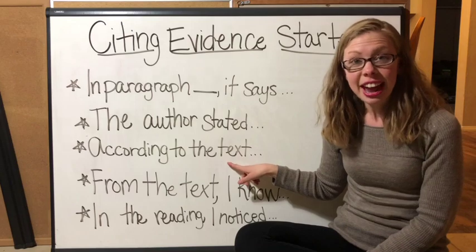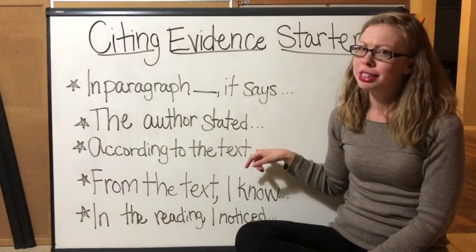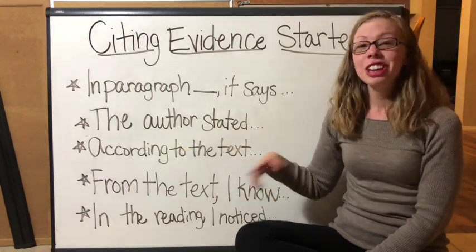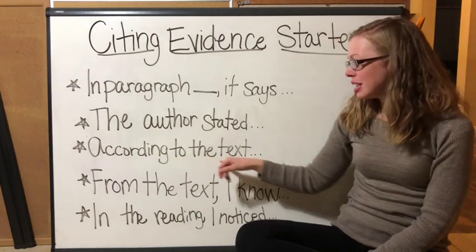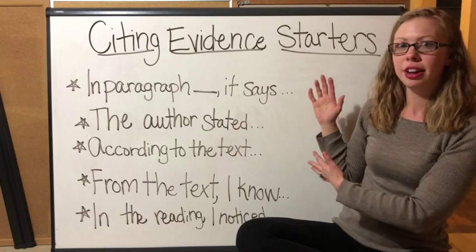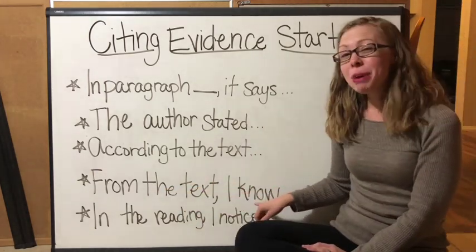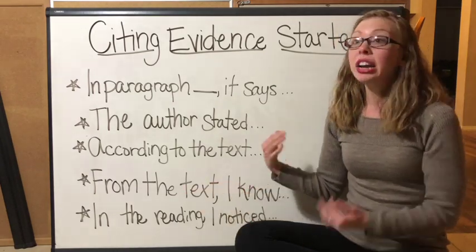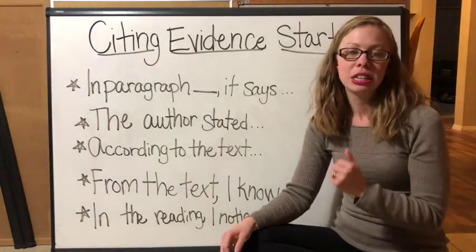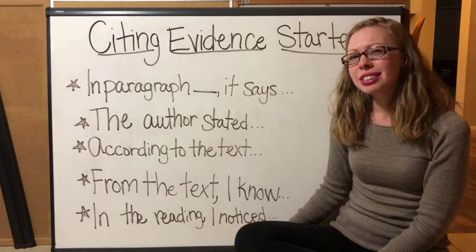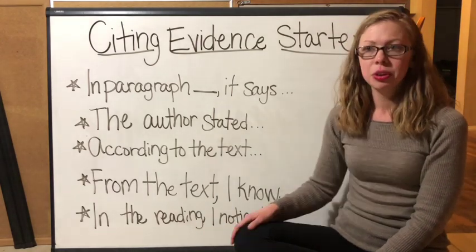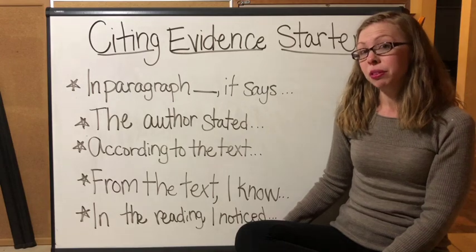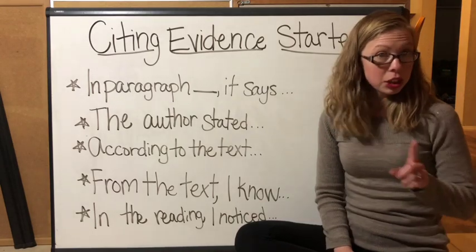Our next one: "According to the text..." — this one always reminds me of Magic School Bus. Do you remember that character Dorothy Ann who always says "according to my research"? Well, you do that right here — she was citing her evidence! "According to the text, I learned..." "From the text, I know..." — if you make an inference from a text you can use this sentence starter. You could say "From the text, I know that so-and-so was feeling this way," or "In the reading, I noticed that..." — also good for an inference. That is how you cite evidence from something you inferred in a text.